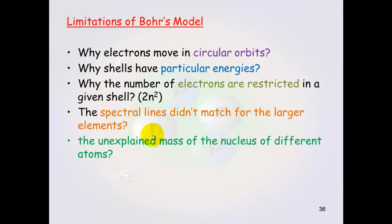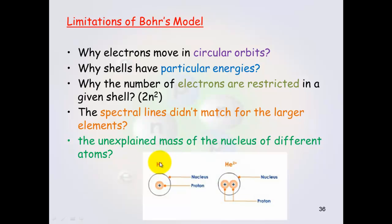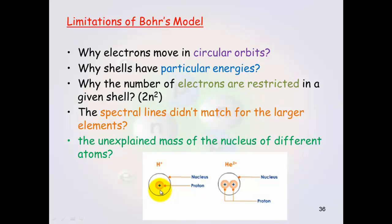And also the fact that the spectral lines didn't match for larger elements. The other important thing that no one has yet explained is the mass of the nucleus being different in different atoms. In hydrogen, you would expect it's got one proton that helium would have a mass that was double the mass of hydrogen. But it didn't. It's got a mass that's four times the amount of hydrogen. So there's something else still there.